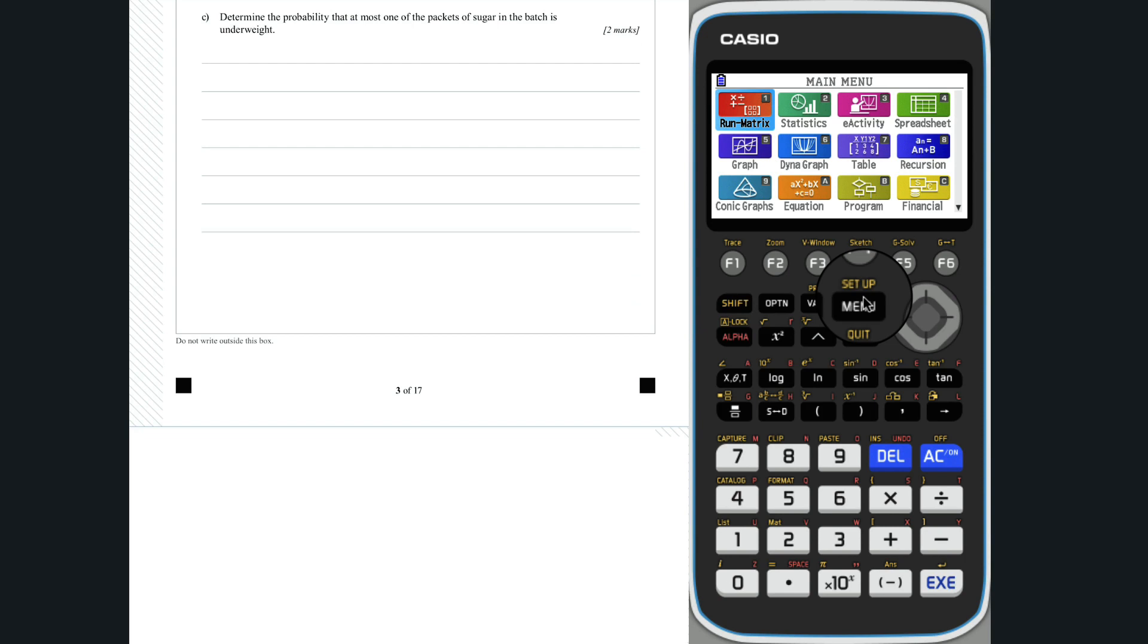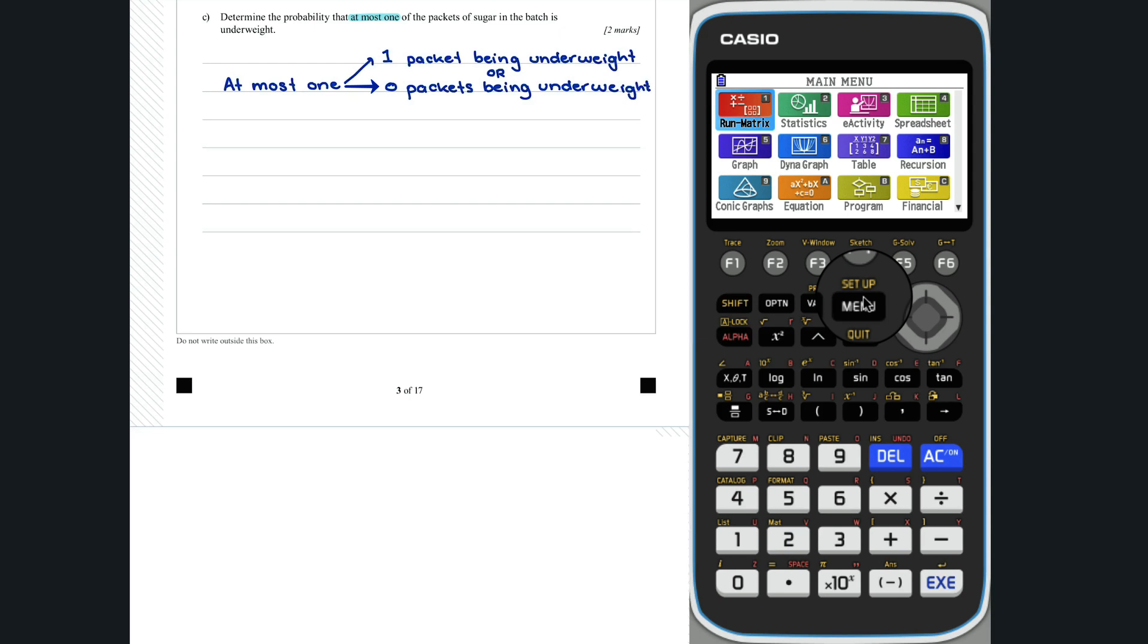Question 11c. The key words in this question are at most one. At most one refers to one packet being underweight or zero packets being underweight, i.e. we need to calculate the probability that x is less than or equal to 1.